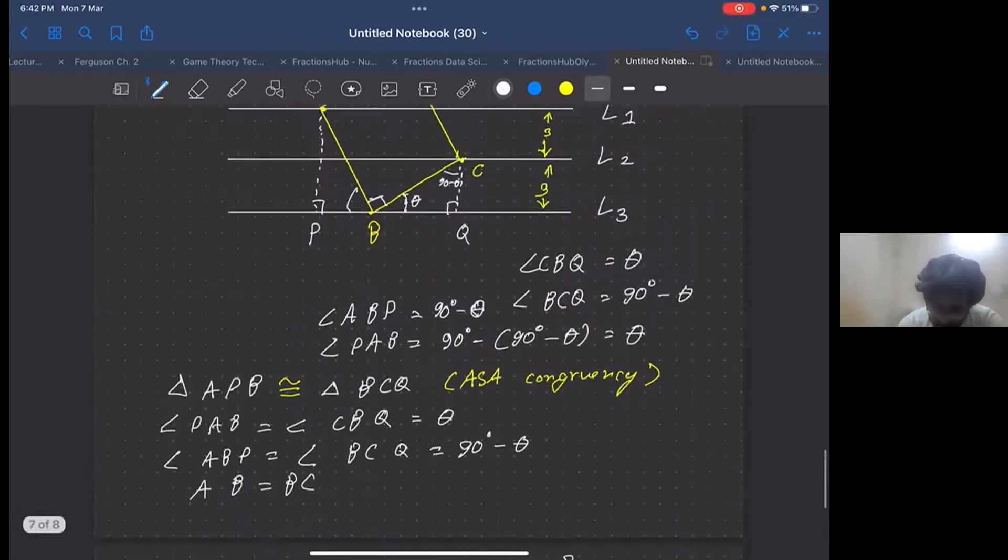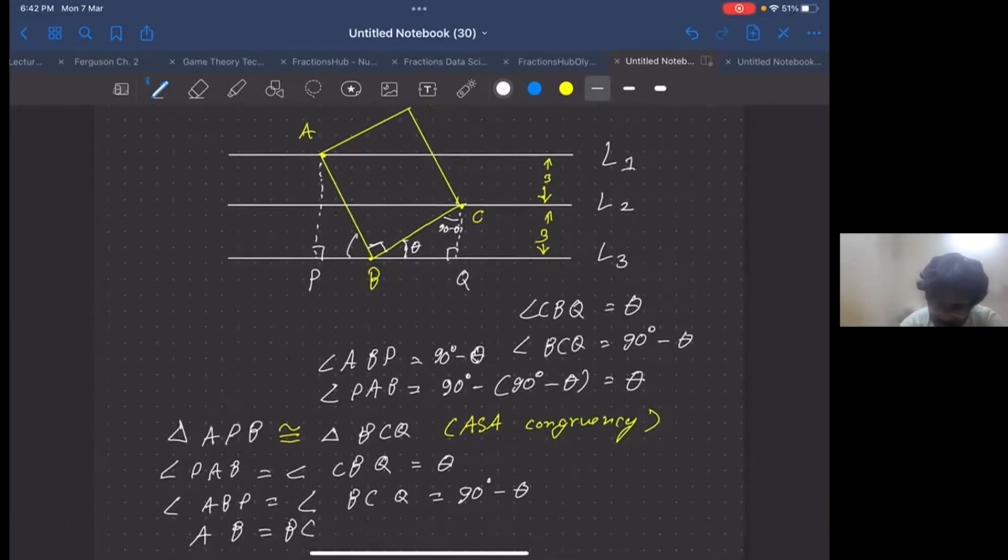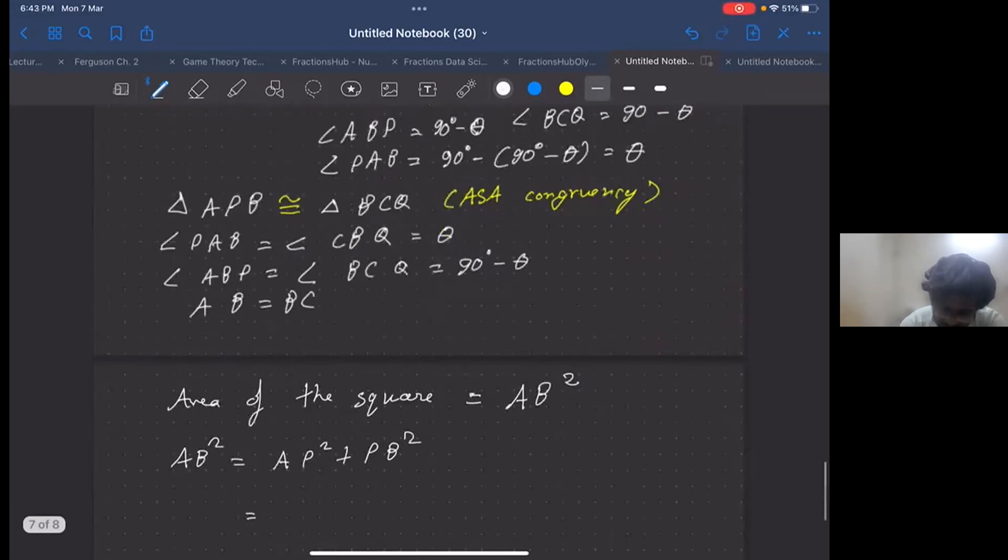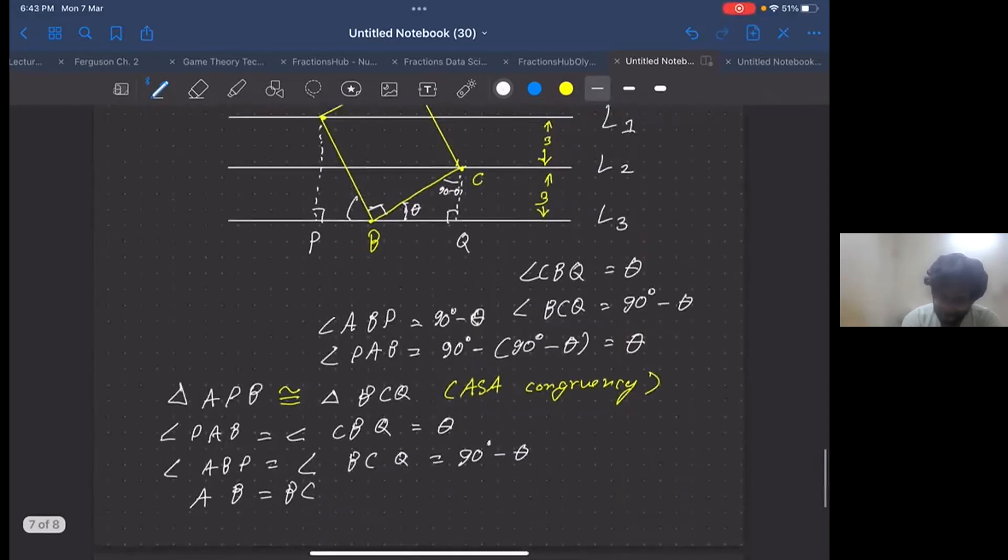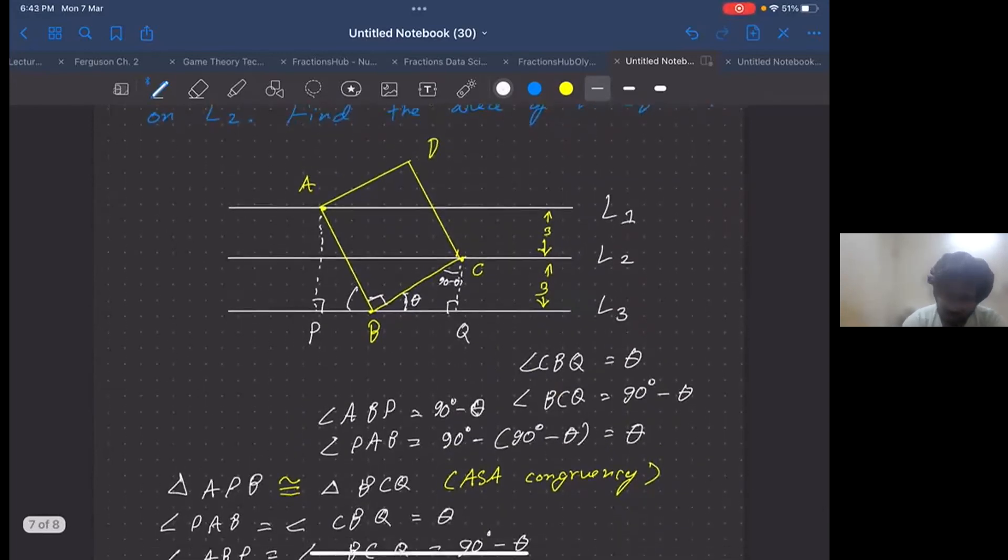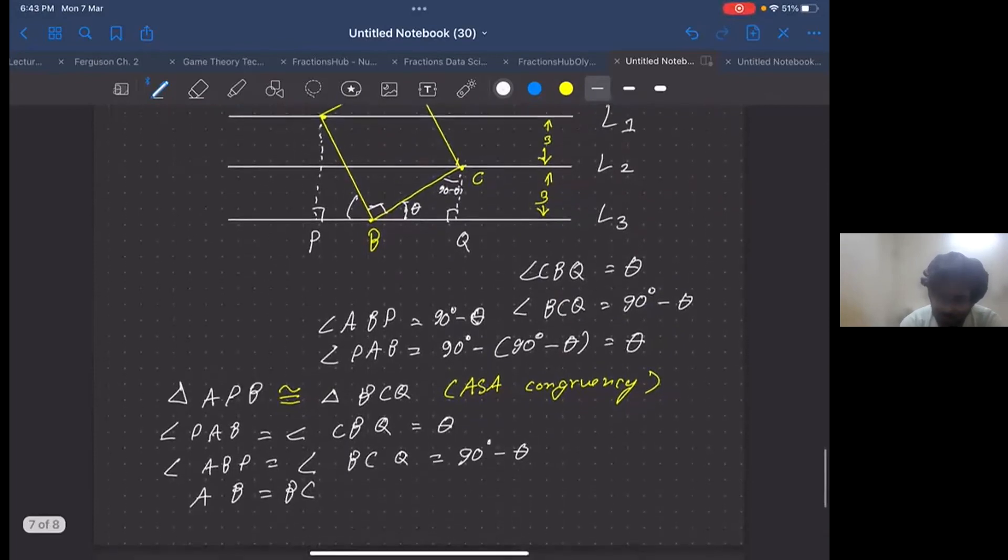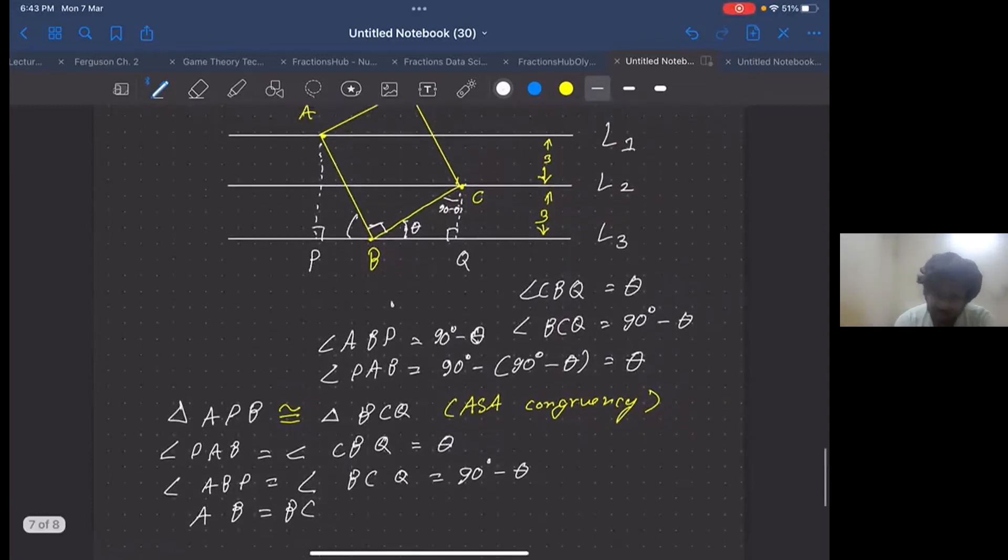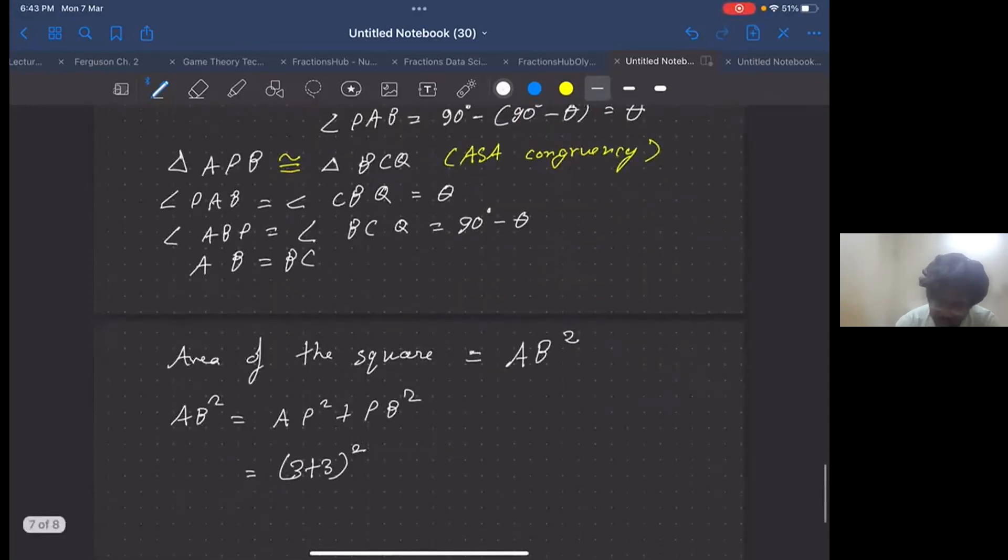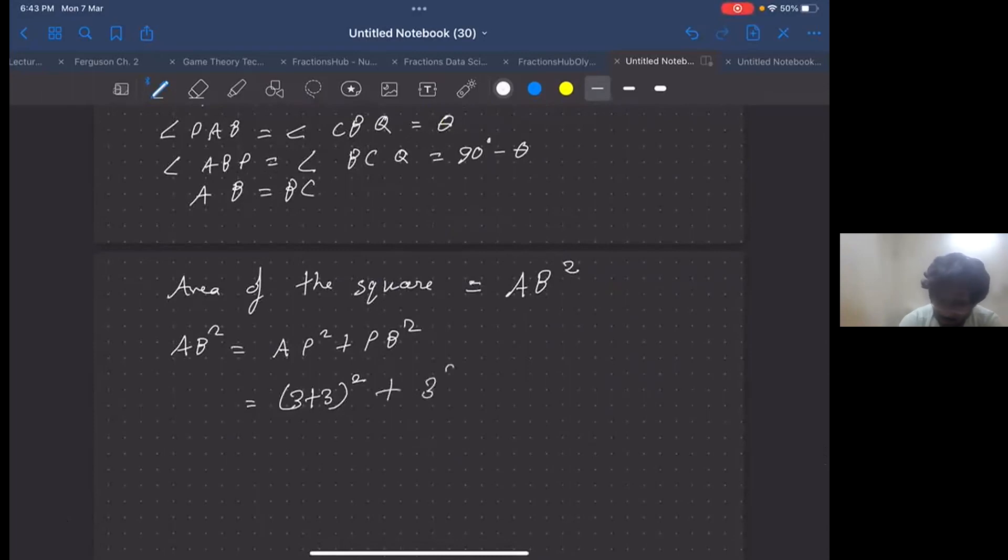We need to find AP squared. AP is the distance between lines L1 and L3, which is perpendicular. So this is exactly the perpendicular distance, which must be 3 plus 3, or 6, squared. Now we need to find PB. As we have already proved these triangles APB and BCQ are congruent, PB equals CQ. And CQ is nothing but the perpendicular distance between L2 and L3, which is 3. So PB is 3 squared.